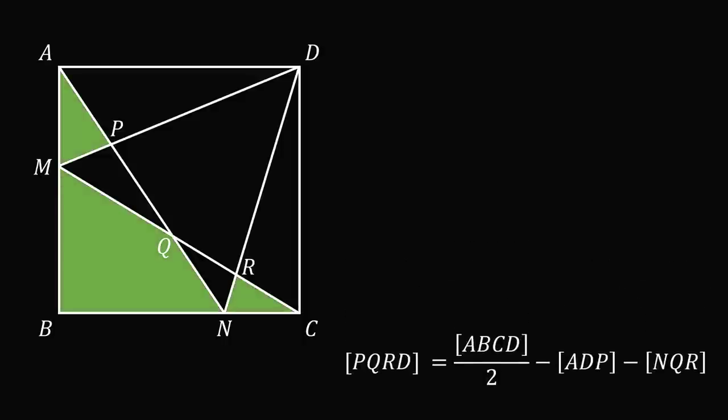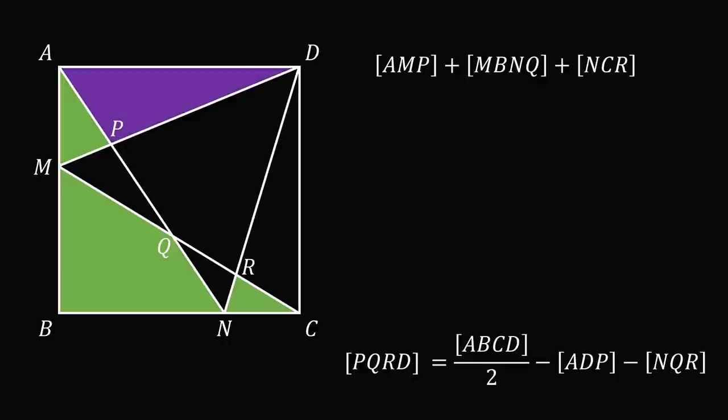We want to calculate the total area of the following three regions. We will consider the area in a different fashion. We'll consider the sum of the areas of triangles ADM and MBC, and then we'll subtract out the areas of the triangles ADP and NQR. This will be equivalent to the total areas that are shaded in green.